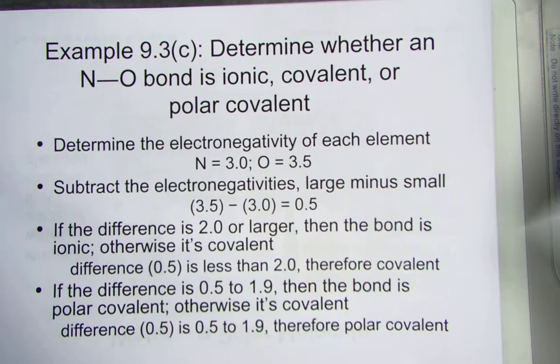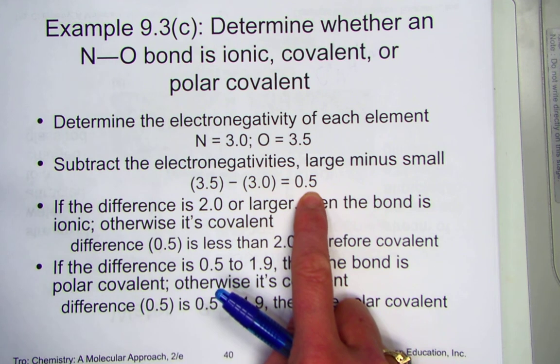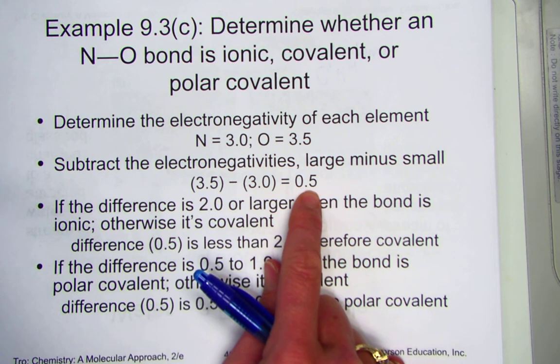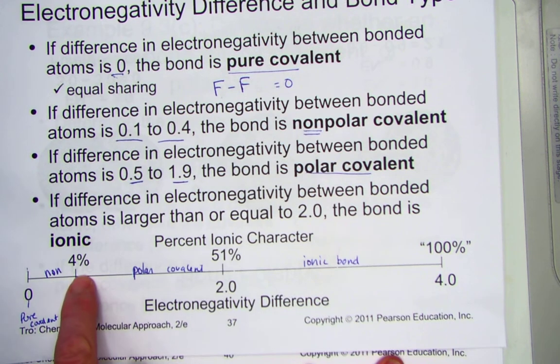The difference between those is found to be 0.5. Large minus the small number, so it always ends up to be an absolute value, a positive. 0.5 is the difference between nitrogen and oxygen. And referring back to where that would fall on our scale, 0.5 lies in the polar covalent region.